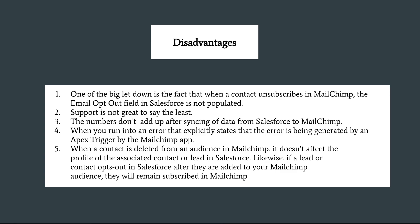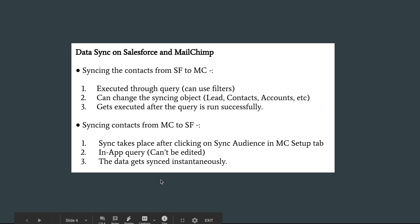When syncing contact data from Salesforce to MailChimp, the native numbers of contacts did not match — the difference was about 1.5%. Also, when you run into an error that explicitly says it is being generated by an Apex trigger, you will have to use a workaround for it.